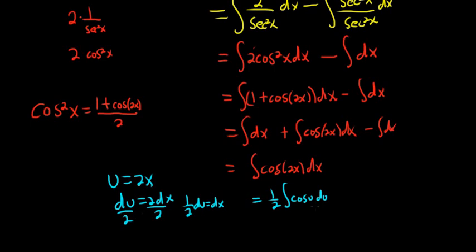And when you're integrating cosine, you just ask yourself, what's a function whose derivative is cosine? Well, sine, right? So this is 1 half sine of u. But u is 2x plus our constant of integration c.